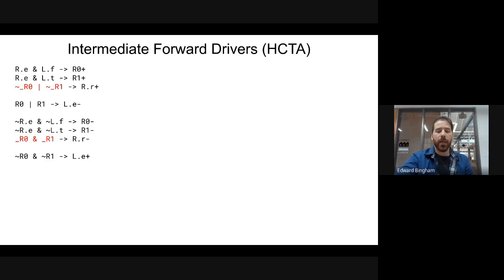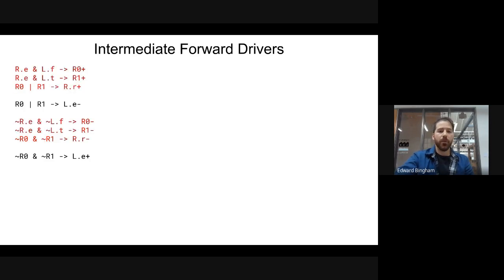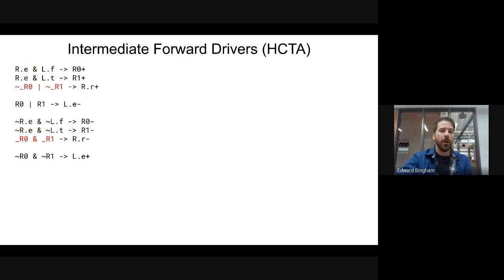Again, you can use the half-cycle timing assumption. The intermediate forward drivers add two transitions to your handshake on the outgoing requests, but applying the half-cycle timing assumption lines them back up again. Now we're only adding one transition, and it's in parallel with R0 and R1 — still the same number of transitions in a standard WCHP handshake.